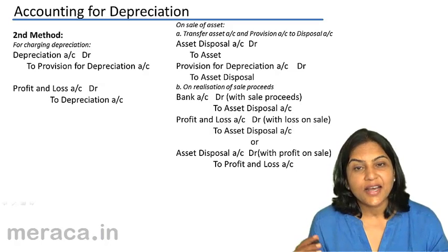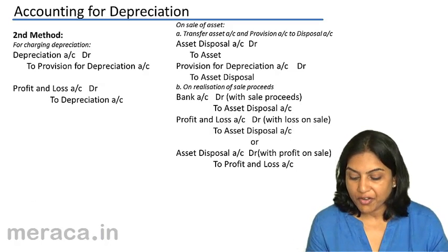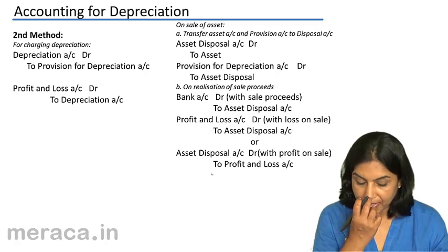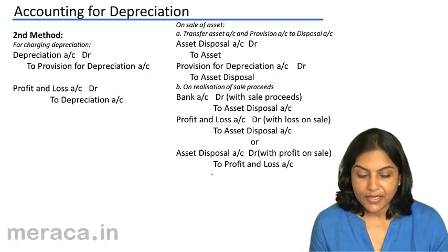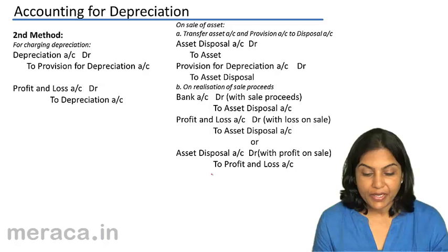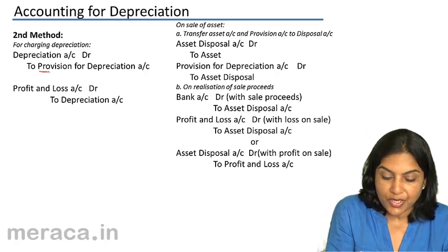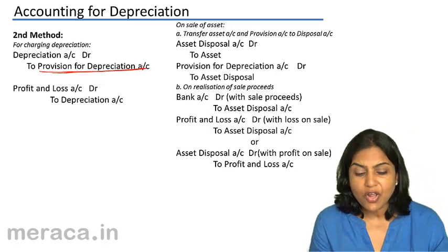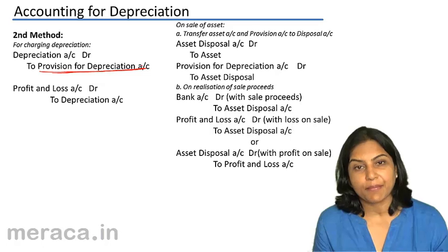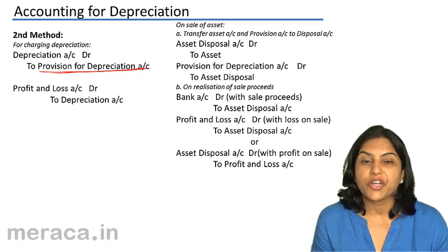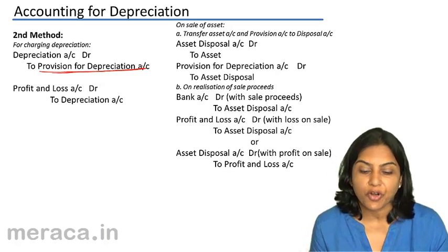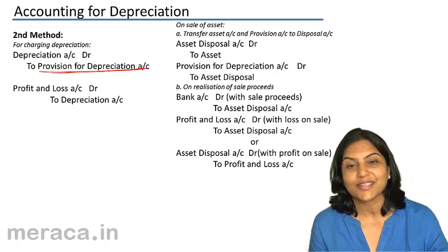There is another method of accounting for depreciation, and this method is more commonly used. Under this method, the depreciation account is debited to provision for depreciation account. We create an account called provision for depreciation account, or sometimes it is called accumulated depreciation account. We do not credit the asset account; instead, a separate account called provision for depreciation is created.